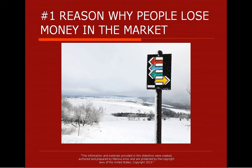The number one reason why people lose money in the market is confusion in the directional bias. It appears that everybody is going this way, and therefore I should — but wait, is that right? Maybe not. I'm not sure. I'm confused. The bottom line is that the number one reason why people lose money in the market is that they're in positions in the wrong direction. This is a simple, simple concept, and yet it is so missed by people.